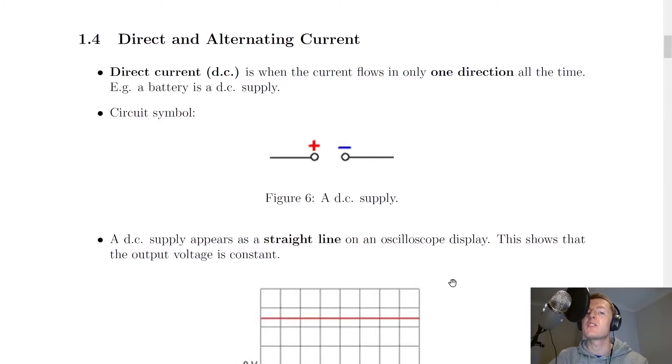The first thing we'll do is look at the definitions and the circuit symbols of DC and AC, and then we'll look at what DC and AC look like on an oscilloscope display.